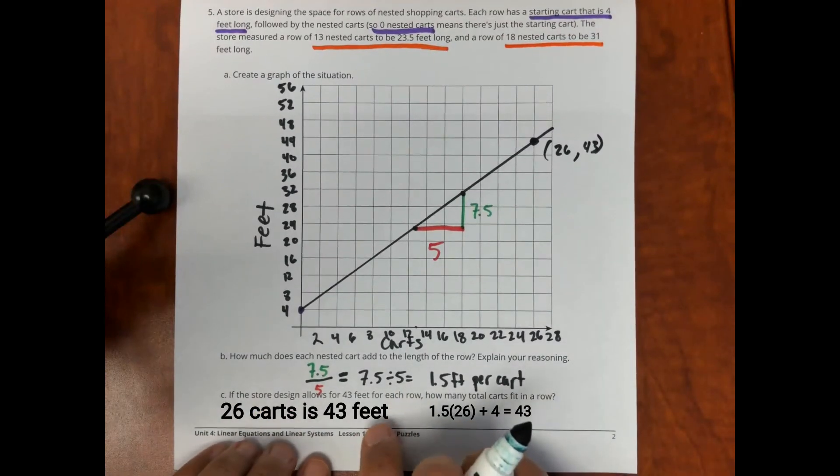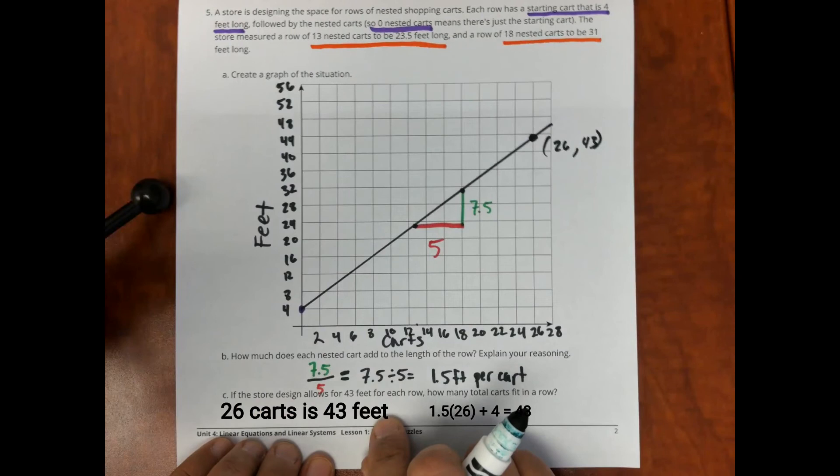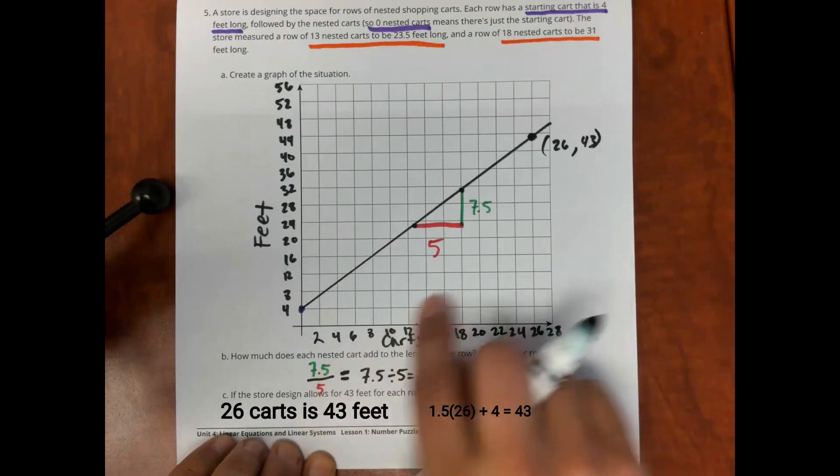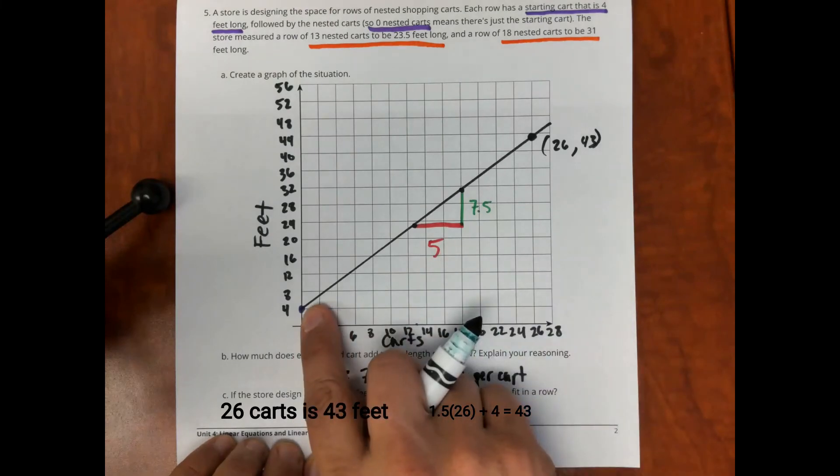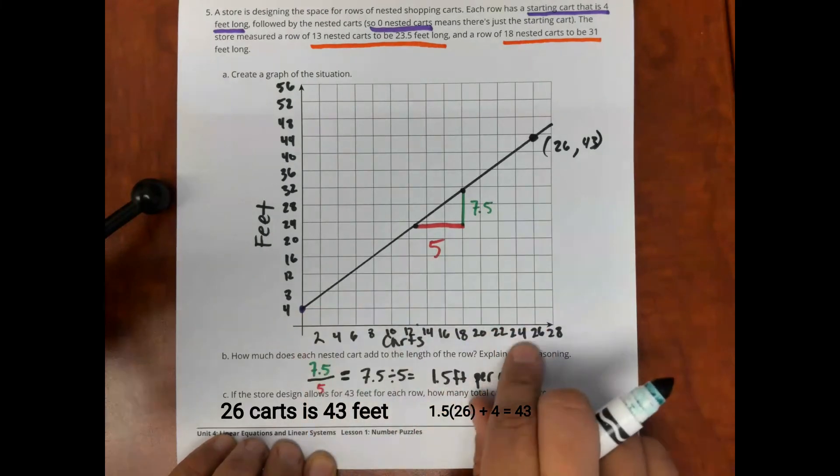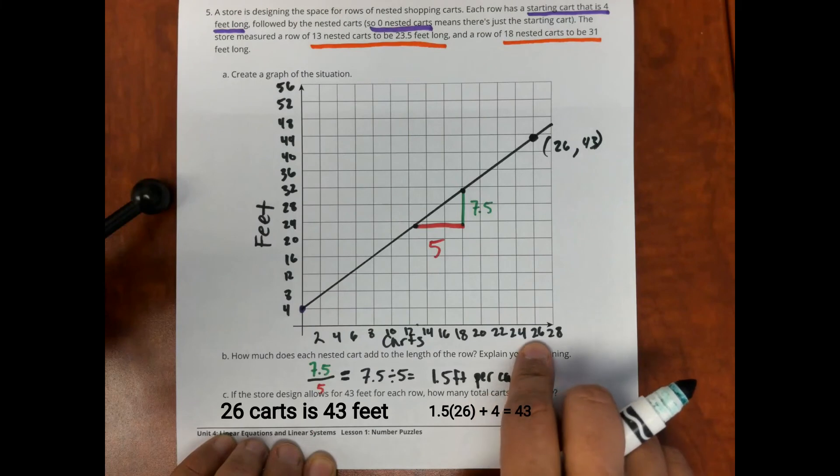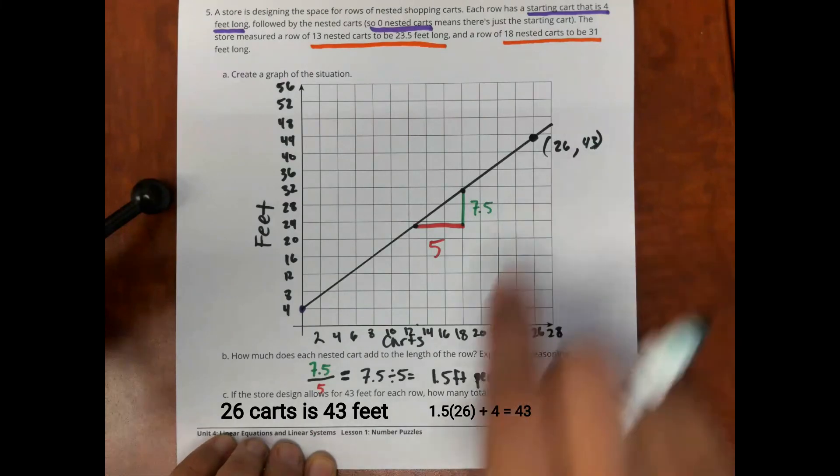Another way to do this problem here is to use what's happening here. You're multiplying by one and a half and then adding four every time. If you were to do one and a half times 26, then plus four, it would be 43.